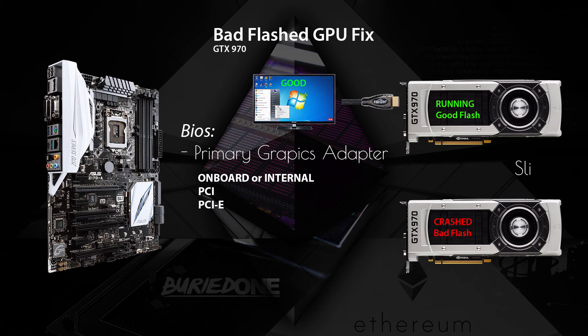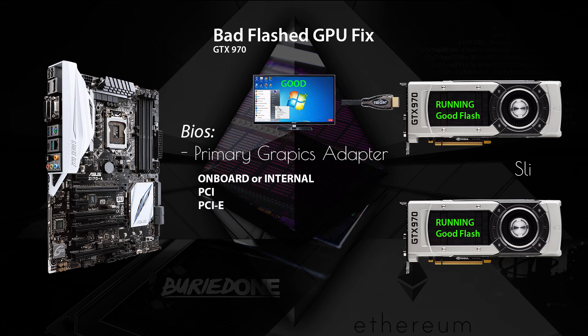I had to put my HDMI into the second GTX 970, and that one worked. What I did was copy the good flash to the crashed bad flash, and then the card started running again. That's how I fixed it. You can change the cards back if you want one on top, but it's not really necessary.